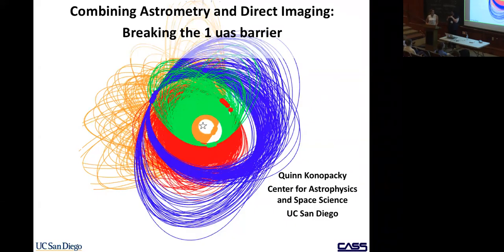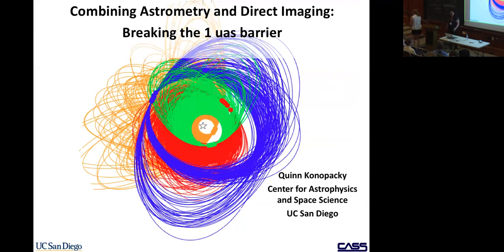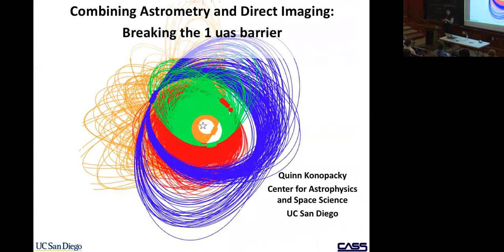Today I was asked to talk about combining astrometry and direct imaging. This is a little different from what you heard about yesterday where you're trying to find astrometric planets. What we're trying to do is get astrometry of directly imaged planets, mostly for orbital characterization.